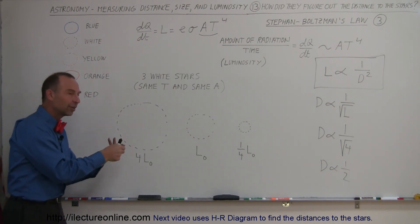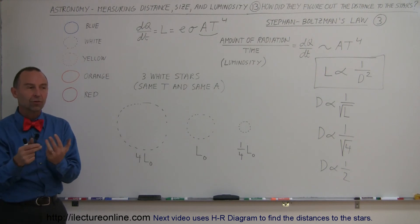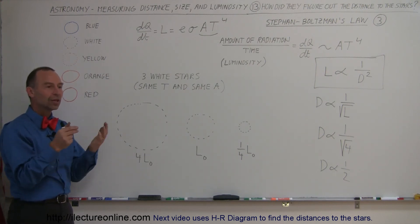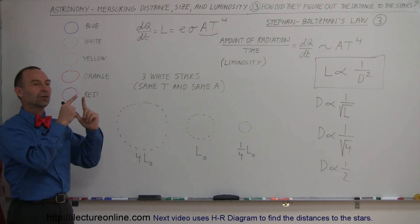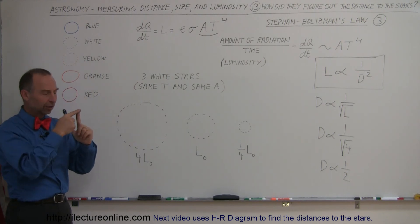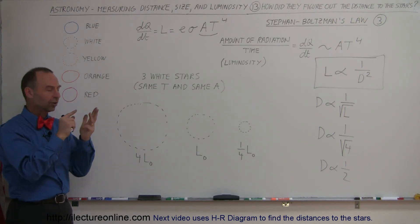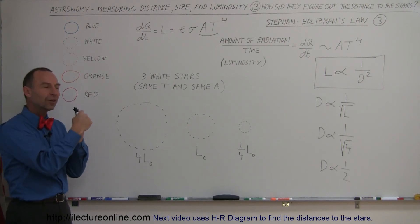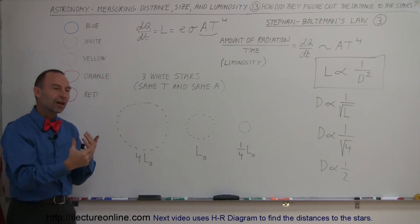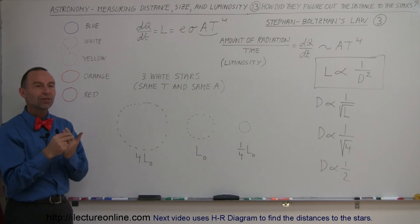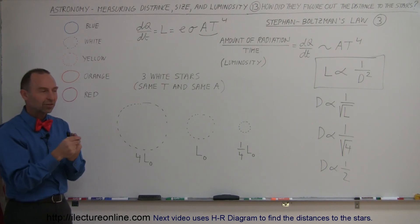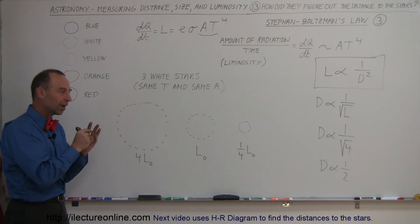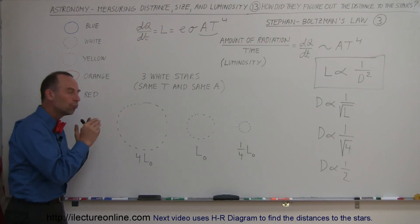We can find their relative distance but not their actual distance, because we don't know their actual size. So we have three things — temperature from color, distance to the stars, and size of the stars — and two of those three we can only find relatively, not actually.